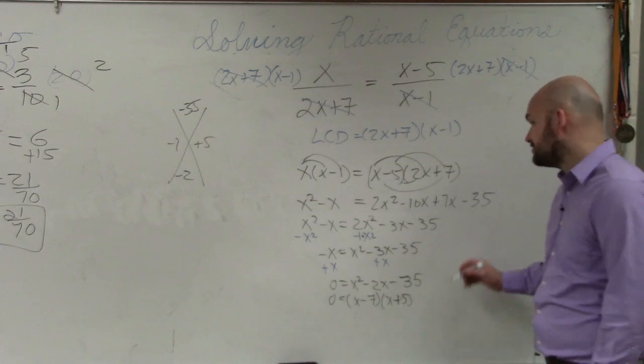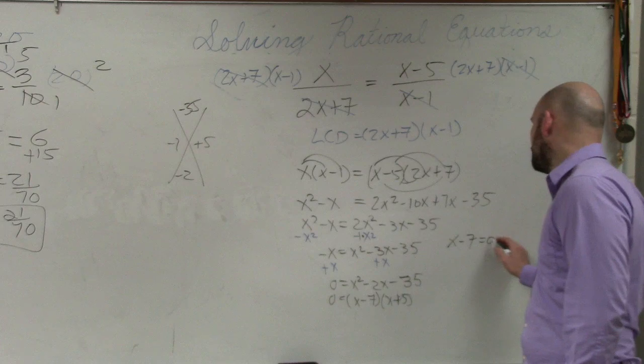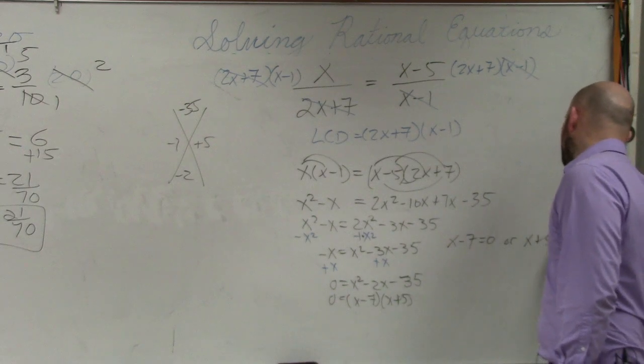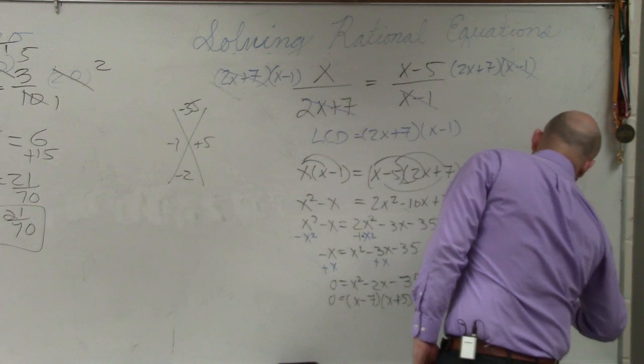Now, we can solve this by applying the zero product property. So we could say x minus 7 equals 0, or x plus 5 equals 0. So therefore, x equals 7 and x equals negative 5.